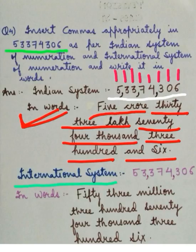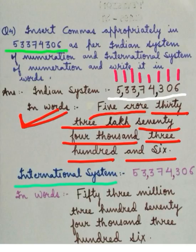Now, international system of numeration. In the international system, the first period is of three digits — the ones period — and after that, all the periods are also of three digits. We have four periods: ones period, thousands period, millions period, and billions period. We have inserted a comma after every three digits. Now let's write it in words.